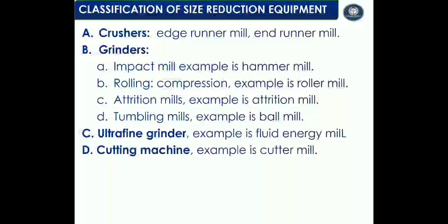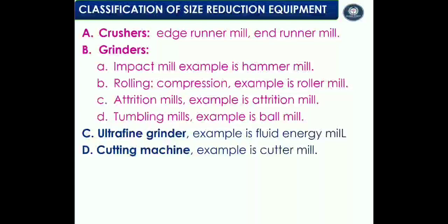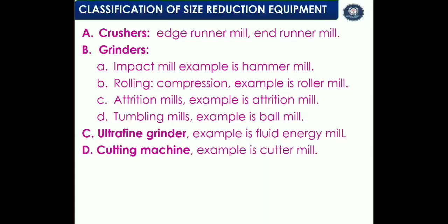The classification of size reduction equipment is categorized under four subcategories: crushers (e.g., edge runner mill and end runner mill), grinders (including impact mill such as hammer mill; rolling such as compression and roller mill; attrition mill; and tumbling such as ball mill), ultra-fine grinders (e.g., fluid energy mill), and cutting machines (e.g., cutter mill).